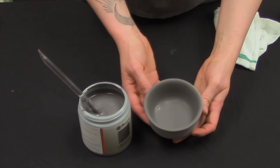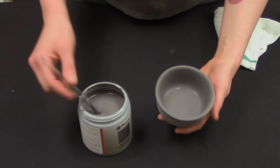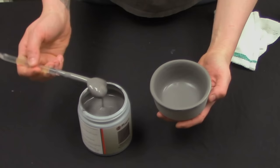Our second coat has semi-dried, so it's lost its shine, but it's not bone dry. As you can see on the outside here, this is bone dry. And we're going to go ahead and apply our third coat.